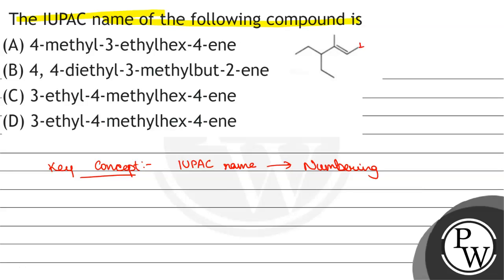The double bond gets priority. This will be 1, 2, 3, 4. Longest chain is - this will be 5, 6. So this will be numbering first.